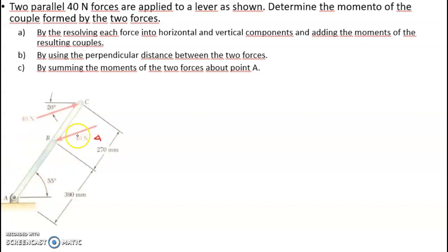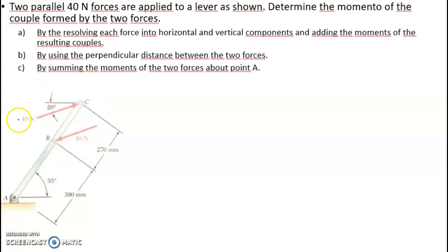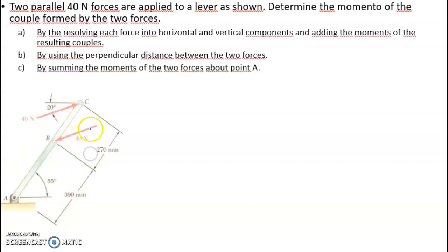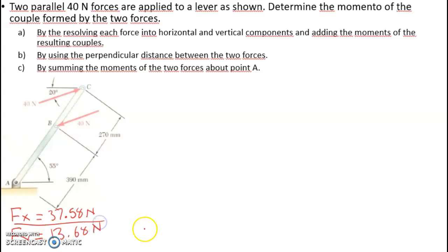We're going to use a different strategy now — we're going to create moments about point A. That means I will have a set of moments created by this force about A and another set created by this other force about A. Since the forces are the same in magnitude, we can recycle the information we already had: Force X is 37.58 Newtons and Force Y is 13.68 Newtons, and those values apply for both forces.